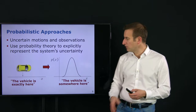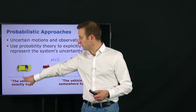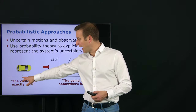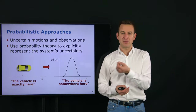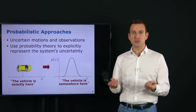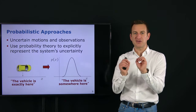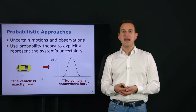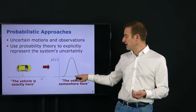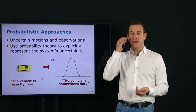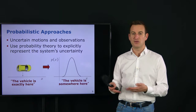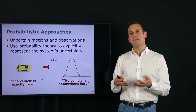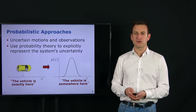In the non-probabilistic world, the description would be that the vehicle is exactly at a specific point. If we describe a 1D space where X is the variable describing where the platform is, the standard non-probabilistic localization would say you're precisely here. The probabilistic approach instead fits a distribution — which may look like a Gaussian but could also be any other type — saying the vehicle is somewhere over here, where higher values indicate higher probability that the platform is in a certain region.